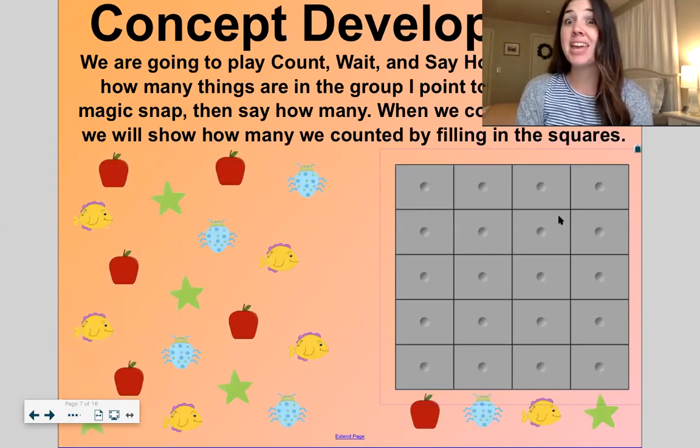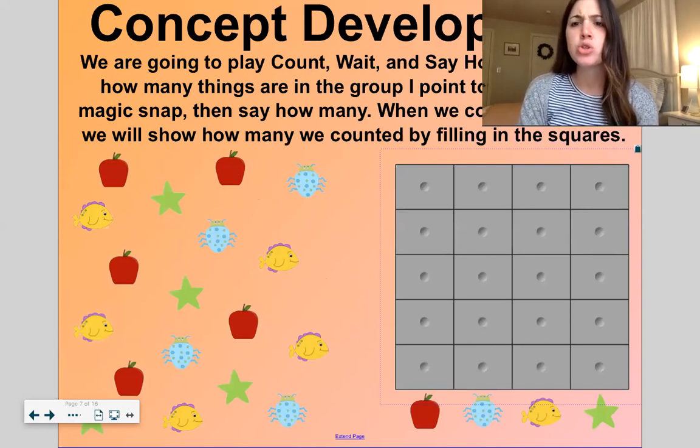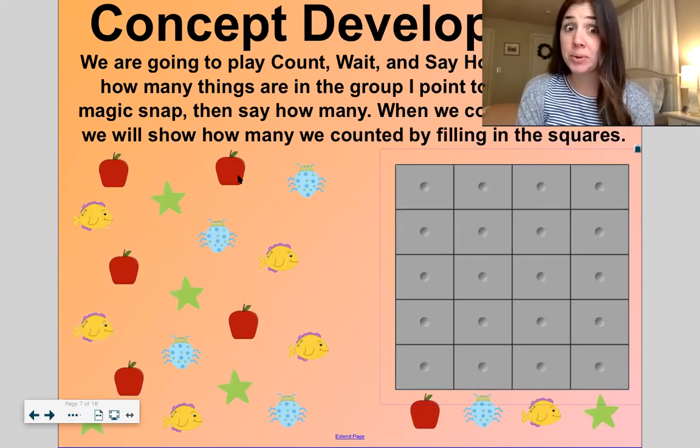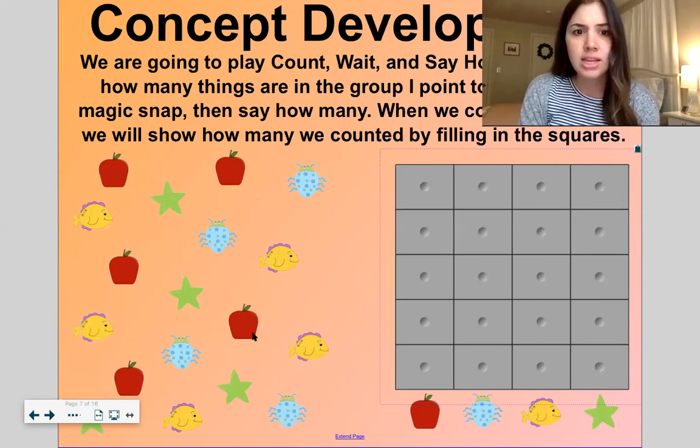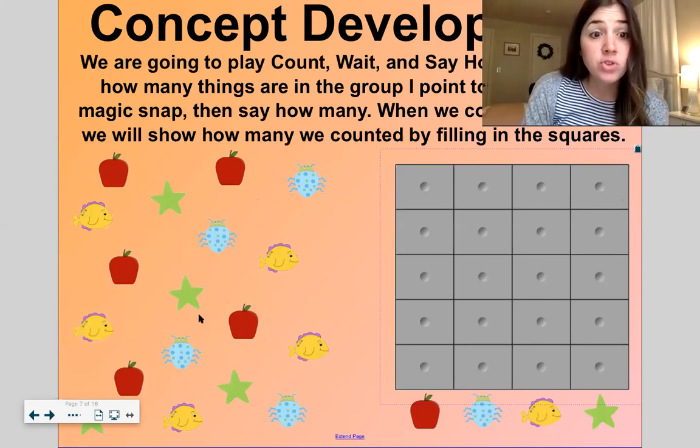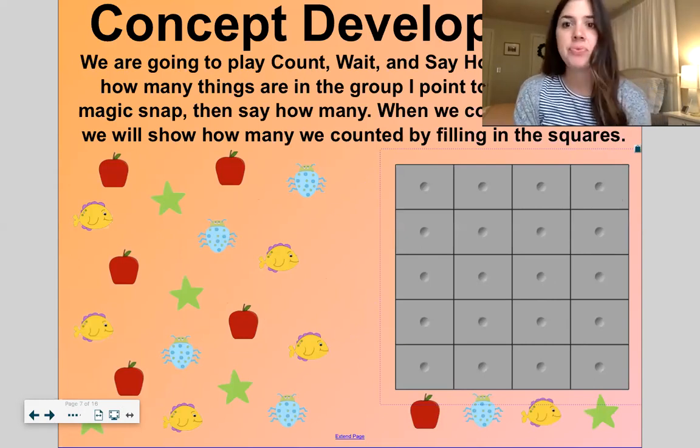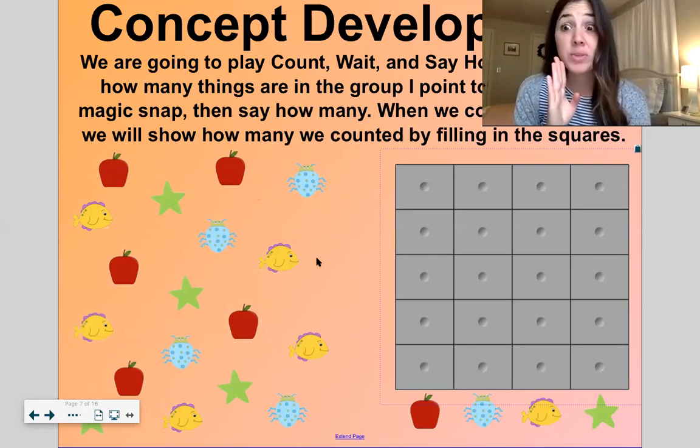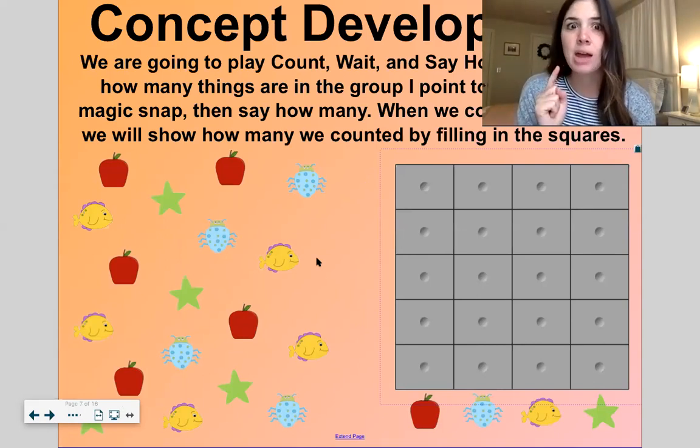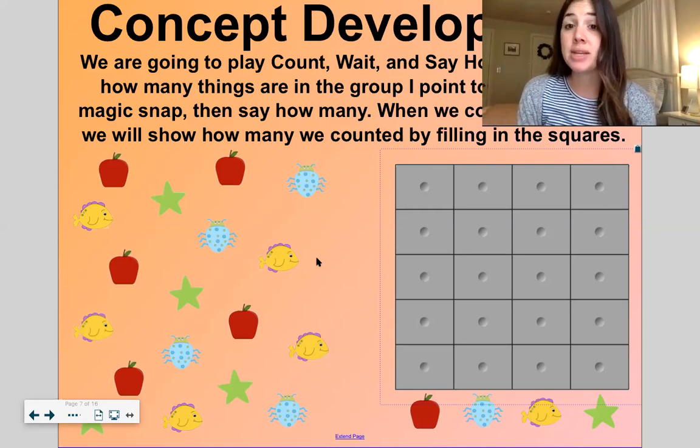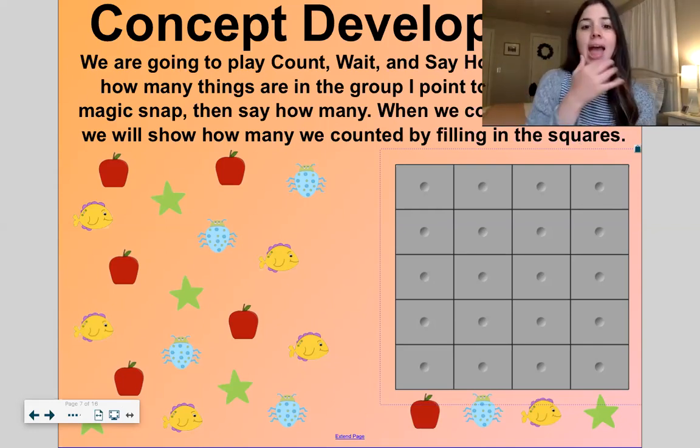Now we're going to play count, wait, and say how many. So count how many things are in the group that I point to. We have a group of apples, a group of fish, a group of ladybugs or beetles, a group of stars, and that's it. When I point to it, I will give you guys a few seconds to count and then I want you to blurt out how many there are. And when we count each group, we'll show how many we counted by filling in these squares and we're going to make a graph.